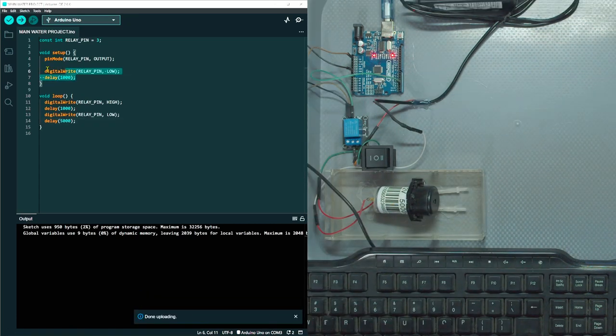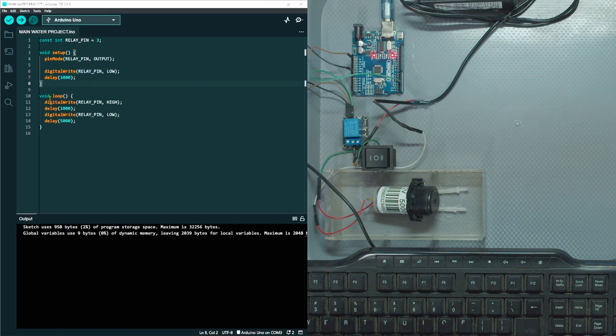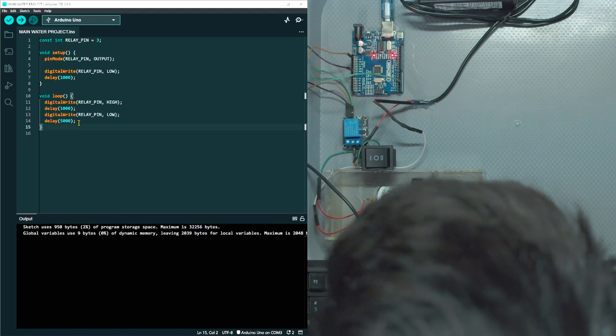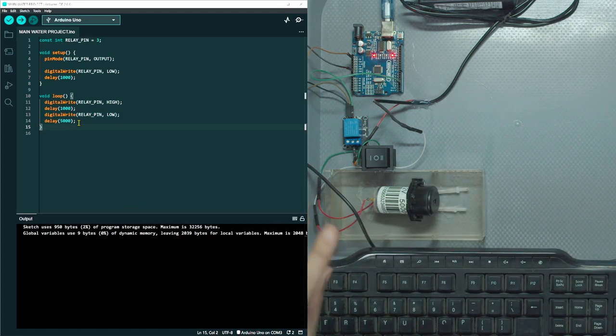So I just changed up the code. I'm going to have it initially turn off for a second. Then I want it to turn on for one second and then turn off for five and repeat. So that's one second on, then five seconds off.